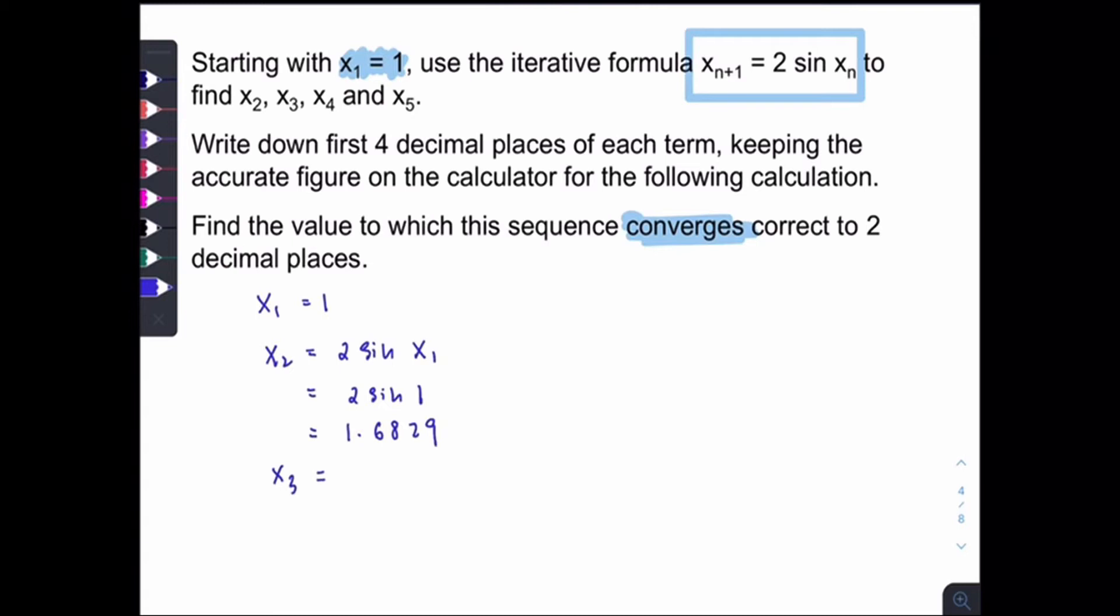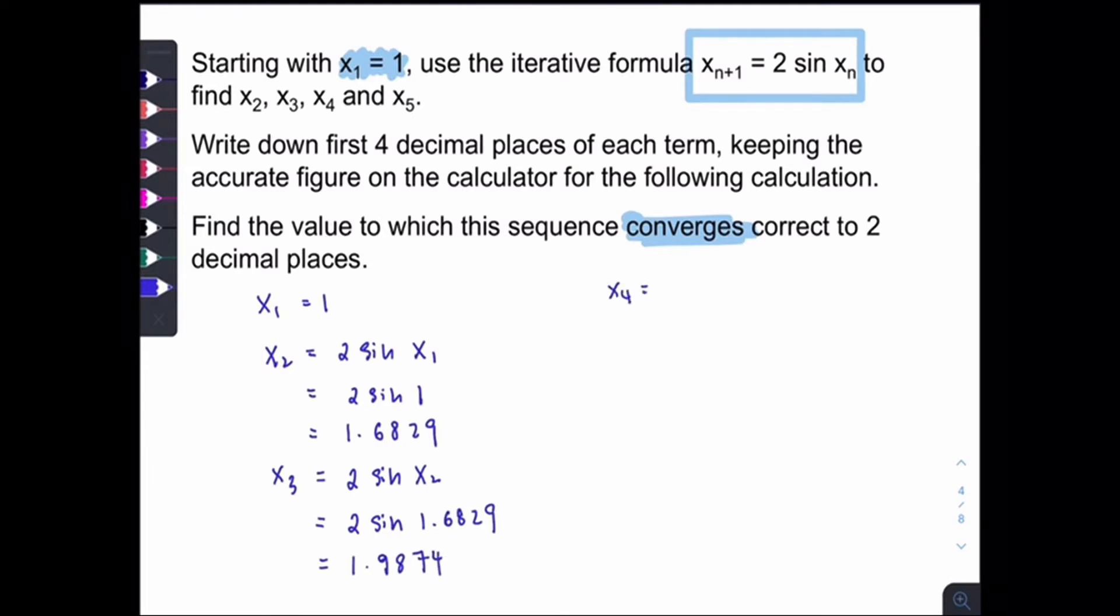So now let's say to find x3. If let's say I want to find x3, if here is 3, that means the n should be 2. So I should sub 2 into here. So x3 should be equal to 2 sin x2, which is the answer from the previous part, 2 sin 1.6829. But you must keep the accurate figure on your calculator for the calculation here. So you just need to press 2 sin the answer in your calculator.